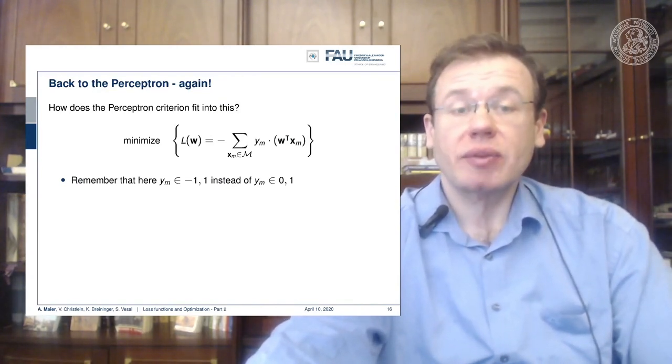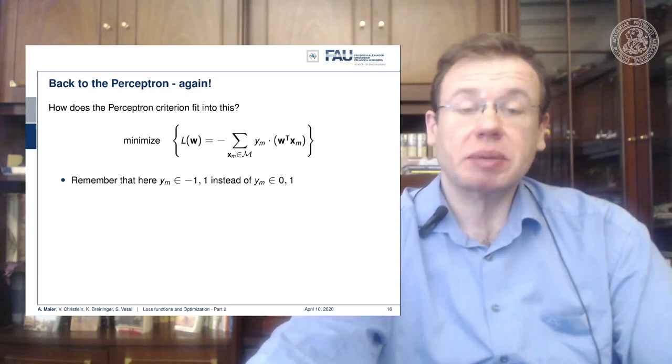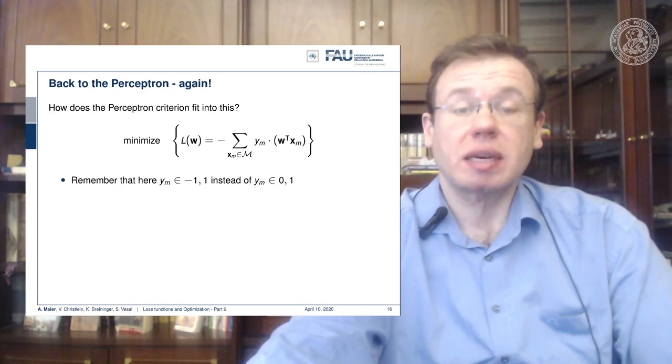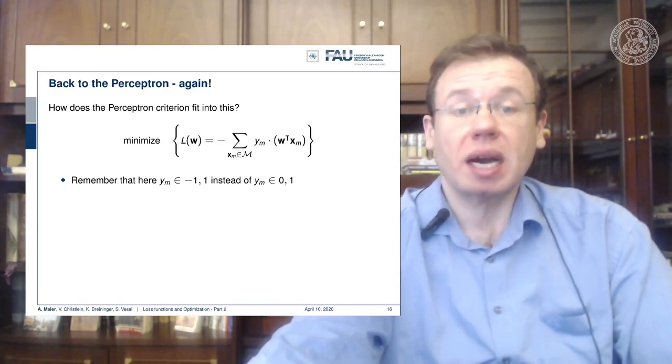You remember that we were minimizing a sum over all of the misclassified samples, and we were choosing this because we could somehow get rid of the sign function and only look into the samples that were relevant for misclassification.